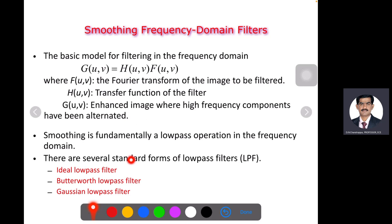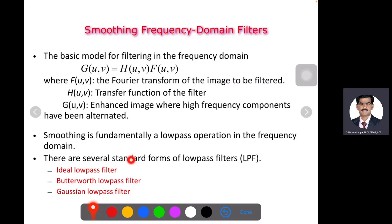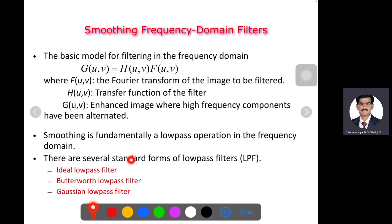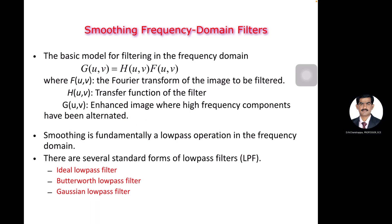Now we'll look into each type one by one. As mentioned in the beginning, we have three types of low-pass filters: ideal low-pass filters, Butterworth low-pass filters, and Gaussian low-pass filters. We will now look into the first one — ideal low-pass filters.